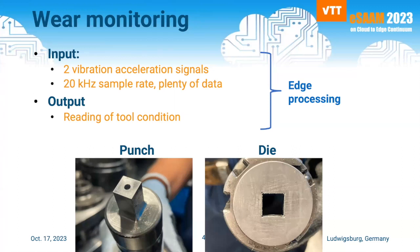What we have measured is 20 kilohertz vibration acceleration, and we want to output just one number per punch. So plenty of data in, little out — and if that doesn't spell edge, then I don't really know what will.